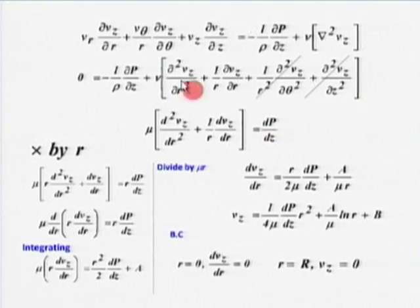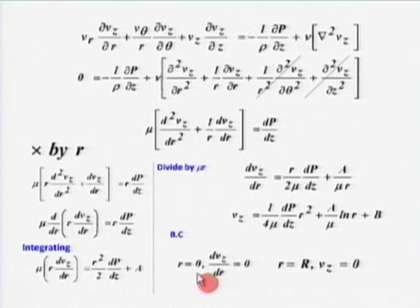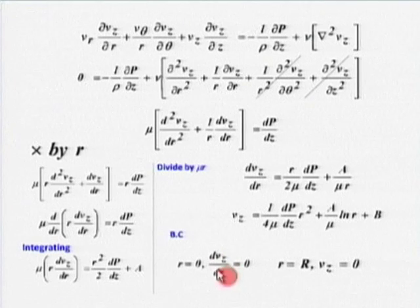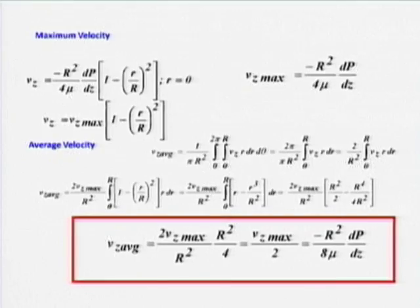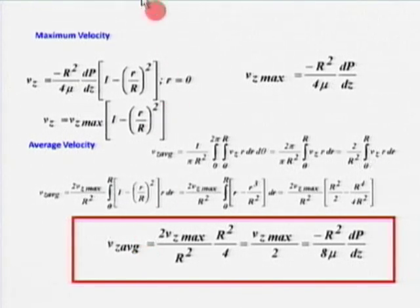Taking this equation and doing the algebra — which I do not intend to go through — the key point is there are two boundary conditions: at R = R (pipe wall), V_Z = 0 (no-slip condition); and at R = 0, dV_Z/dR = 0 (symmetric velocity profile). Taking these two boundary conditions gives us the paraboloid velocity profile, from which V_Z_average = (1/2) × V_Z_maximum.